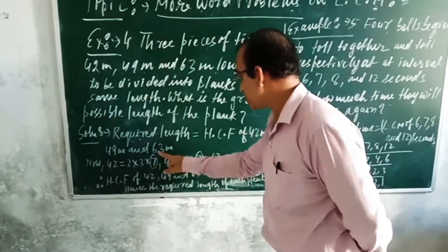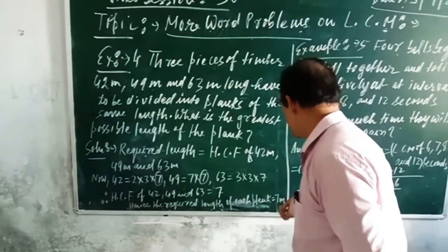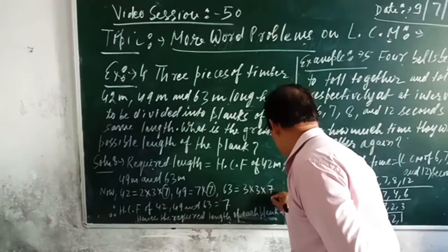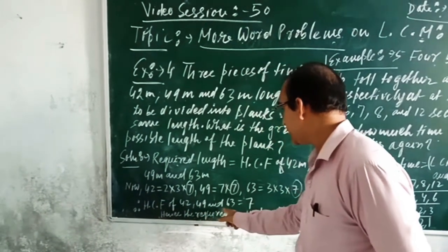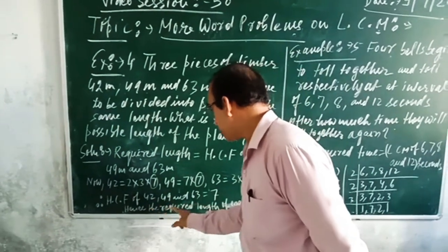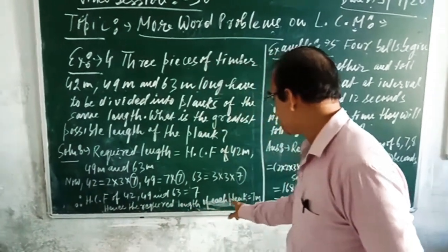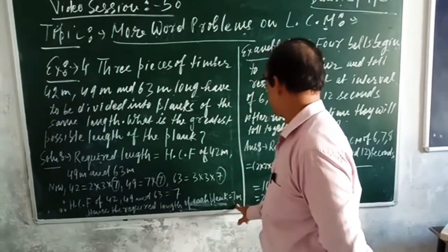The common factor is 7. 7 is also here, 7 is also here and 7 is also here. Hence, the HCF of 42, 49 and 63 is 7. Hence, the required length of each plant is 7 meter.